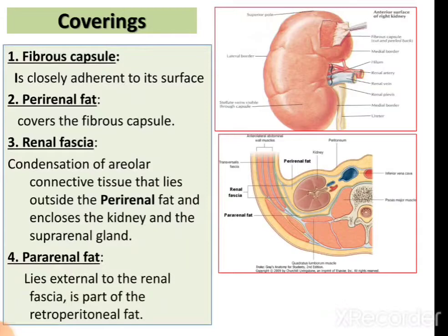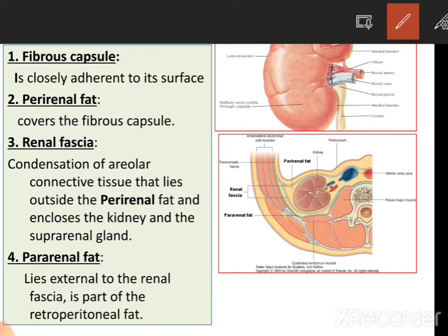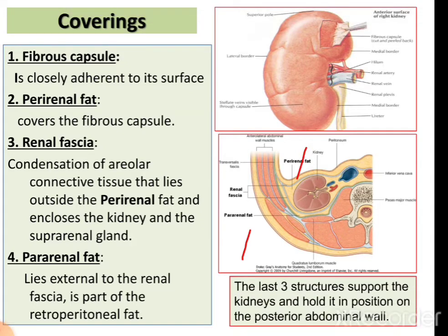The kidney has four coverings from inside to outside. The innermost covering is the fibrous capsule, which is very closely adherent to the surface of the kidney. Outside it is the perirenal fat, which covers the fibrous capsule. Then the renal fascia, which is a condensation of areolar connective tissue lying outside the perirenal fat, encloses the kidney and the suprarenal gland. The outermost layer is the pararenal fat, which lies external to the renal fascia and is part of the retroperitoneal fat. These last three structures support the kidneys and hold them in position on the posterior abdominal wall.